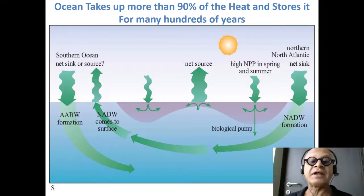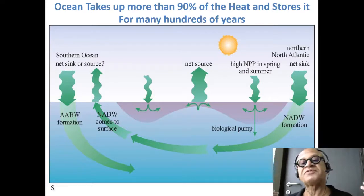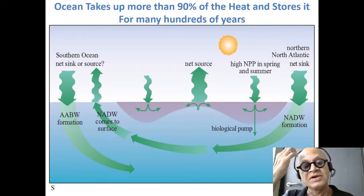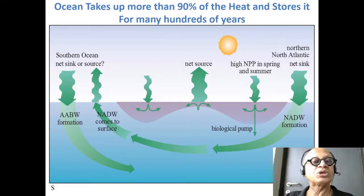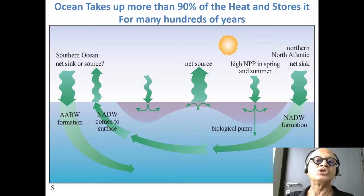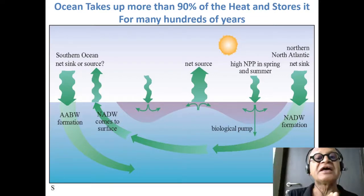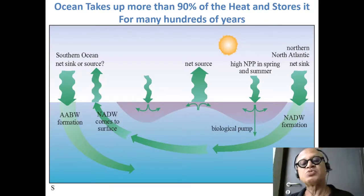On shorter timescales — monsoons, El Niño, decadal oscillations, and all these climate modes — most of them tend to be coupled. El Niño is one of the strong coupled modes where the ocean and the atmosphere talk to each other very closely, and what happens depends on how they interact. There are similar modes of variability in the Indian and Atlantic oceans, which we will mention briefly.